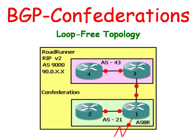If an autonomous system had 10,000 BGP speakers, the autonomous system could be broken up into 100 confederations, so that each confederation would only have to create a full mesh with an average of 100 routers.